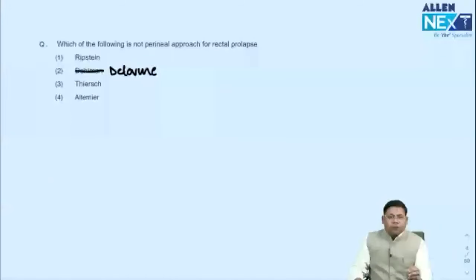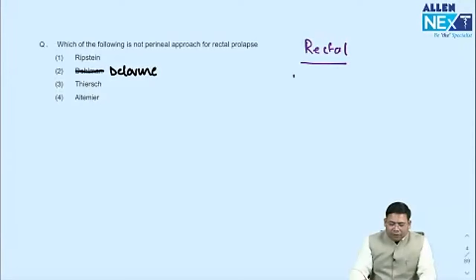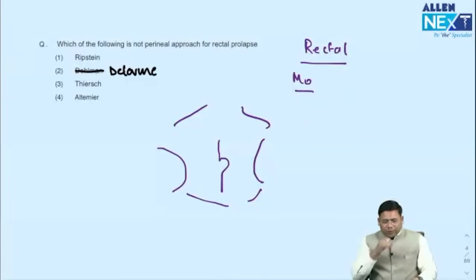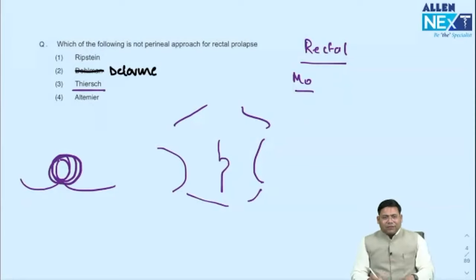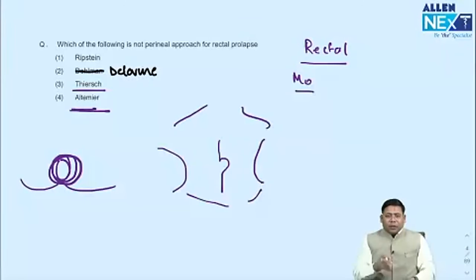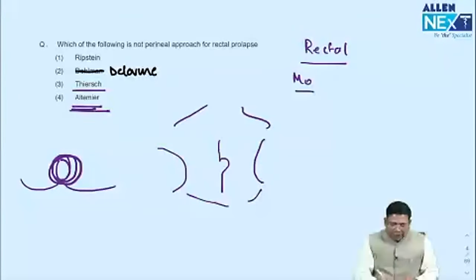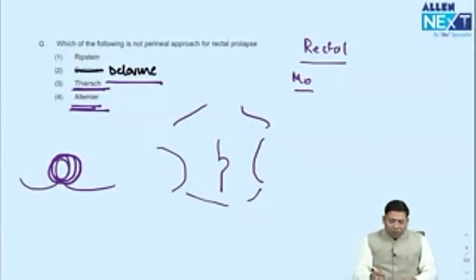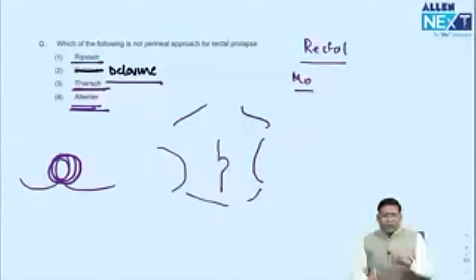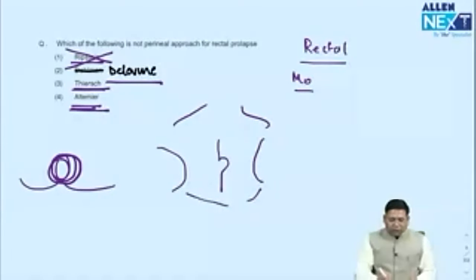Rectal prolapse management: perineal approaches are now less preferred. Thiersch is a perineal approach using encircling wiring — only for patients absolutely unfit for surgery. Altemeier is perineal rectosigmoidectomy with pexy — remove redundant rectum and sigmoid if required, then do pexy. Delorme involves reefing of the prolapsed part. Ripstein and Moskowitz are abdominal approaches, not perineal. Therefore, Ripstein is not a perineal approach.